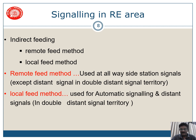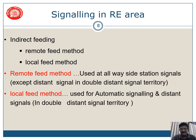Now, indirect feeding. If the distance is above 220 meters on double line or 180 meters on single line, then we will go for indirect feeding. In indirect feeding, there are two methods: remote feed method and local feed method. Remote feed method is used on all wayside station signals, except distance signals in double distance signaling territory. Local method is used for automatic signaling and distance signals in double distance signaling territory.